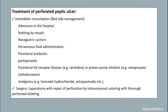Treatment of perforated peptic ulcer: immediate resuscitation includes admission to hospital, nothing by mouth, nasogastric suction, IV fluid administration, parenteral antibiotics, pantoprazole, H2 receptor blockers, and catheterization. Surgery is finally done, which includes laparotomy with repair of the perforation by intracorporeal suturing with thorough peritoneal toileting.